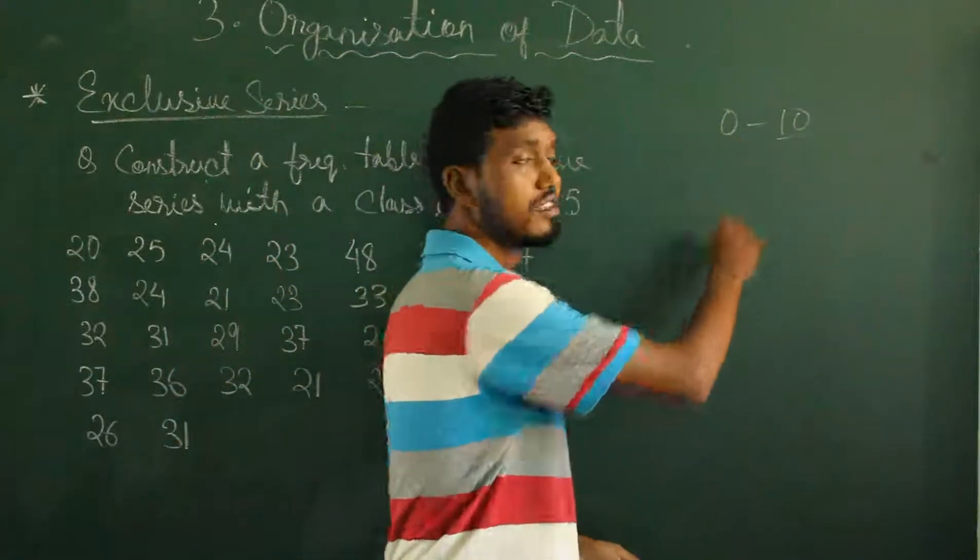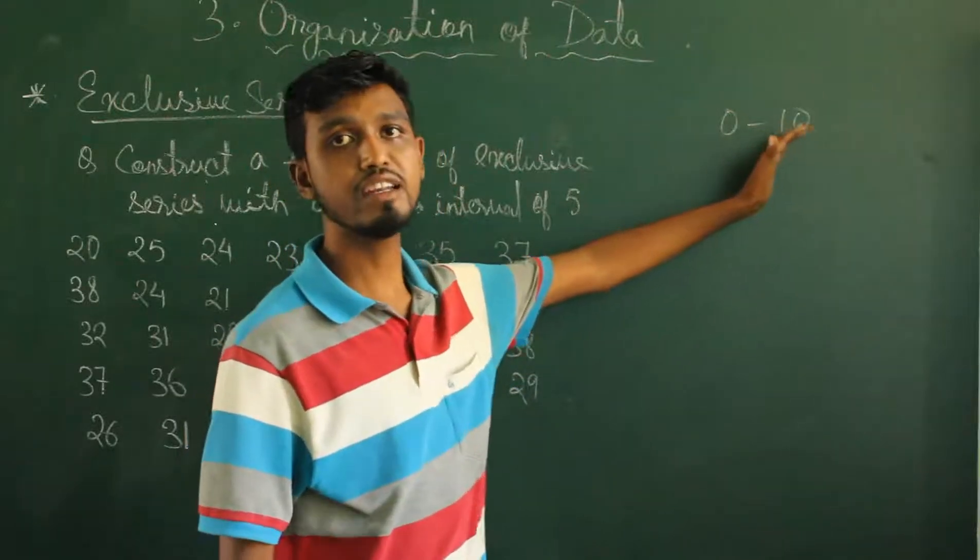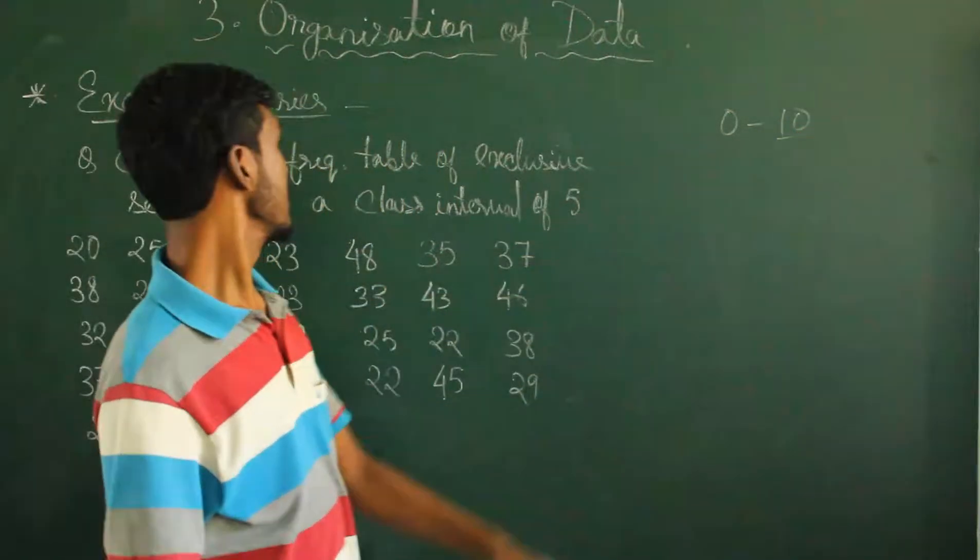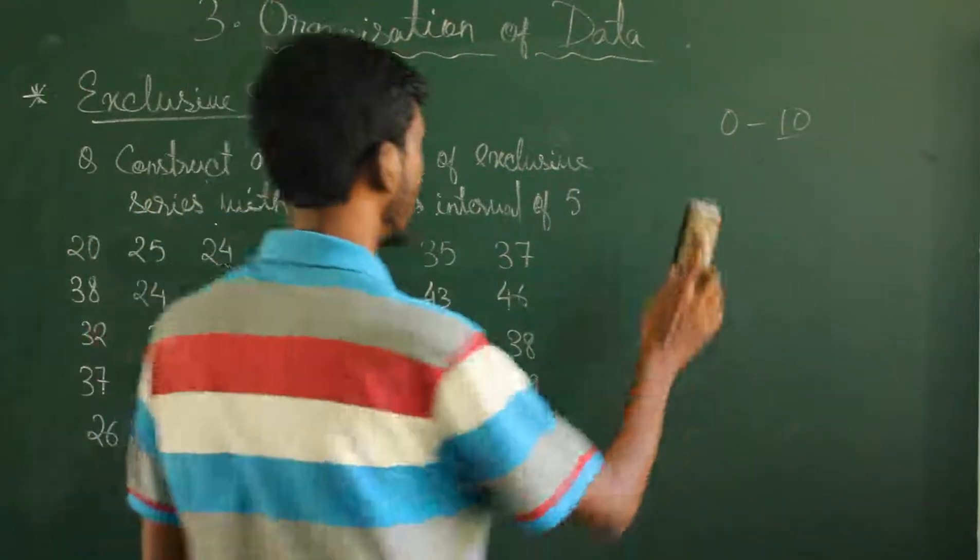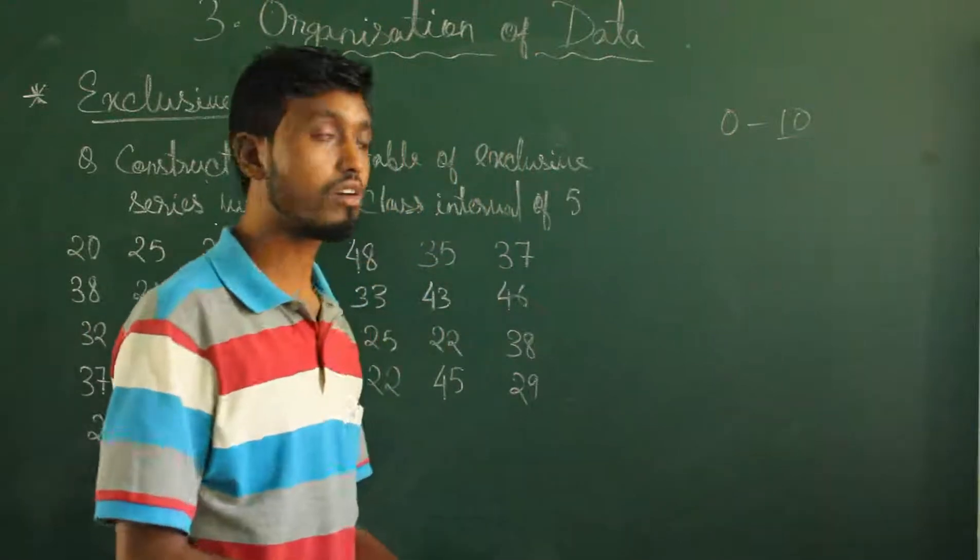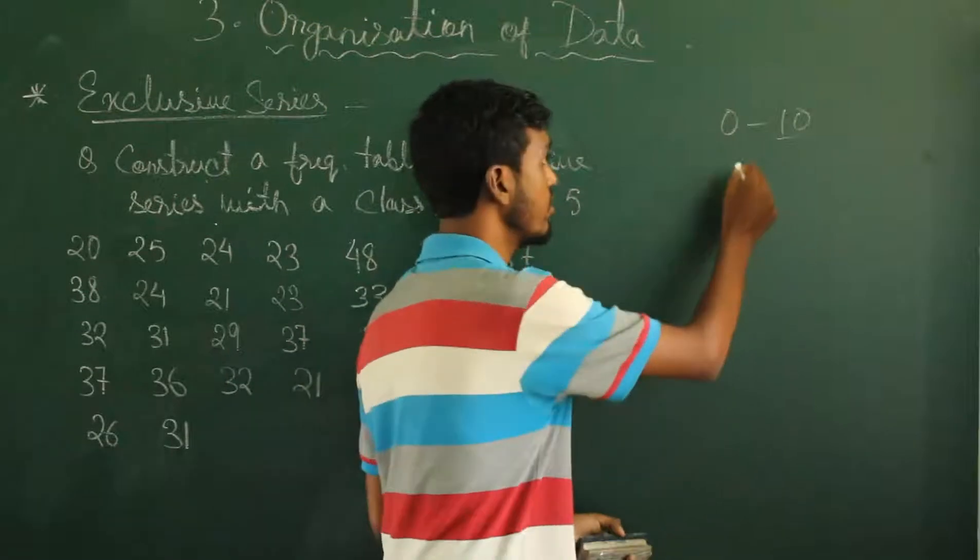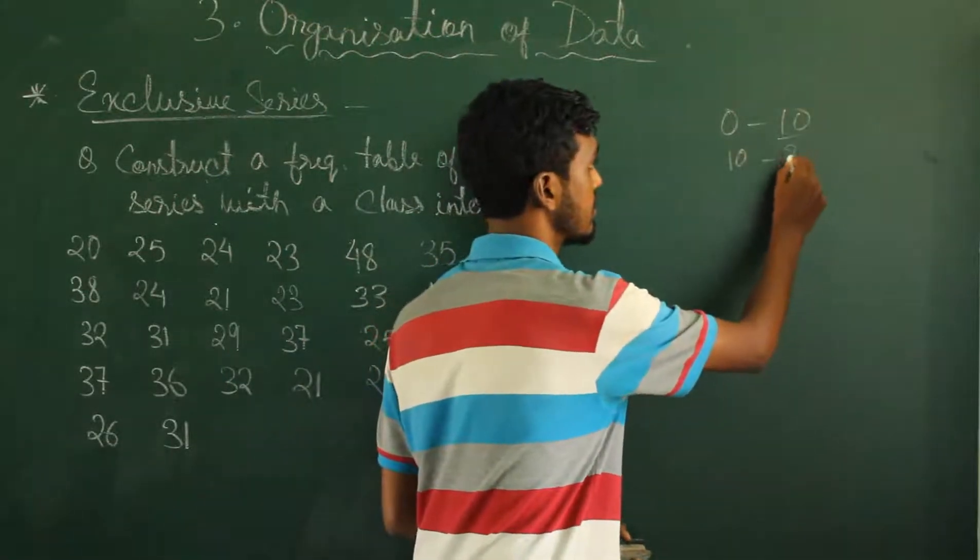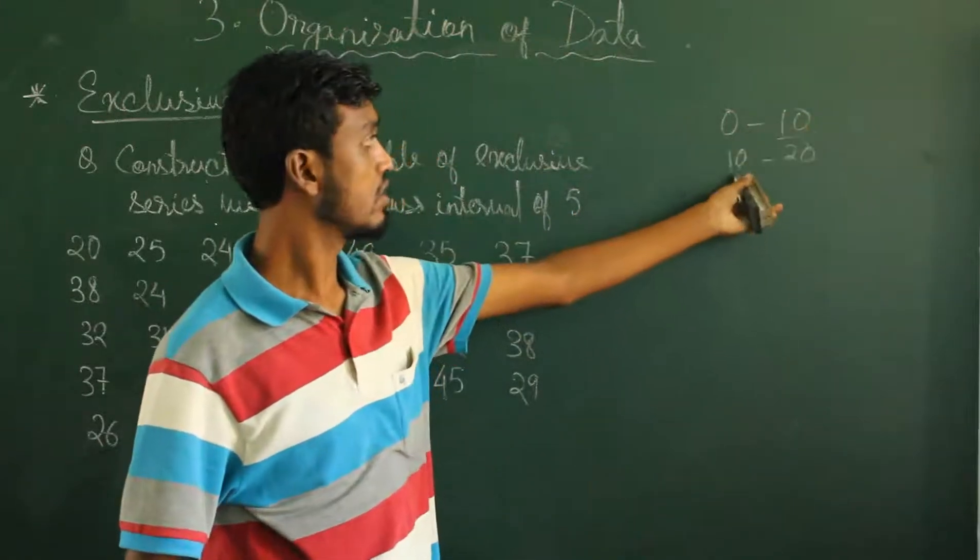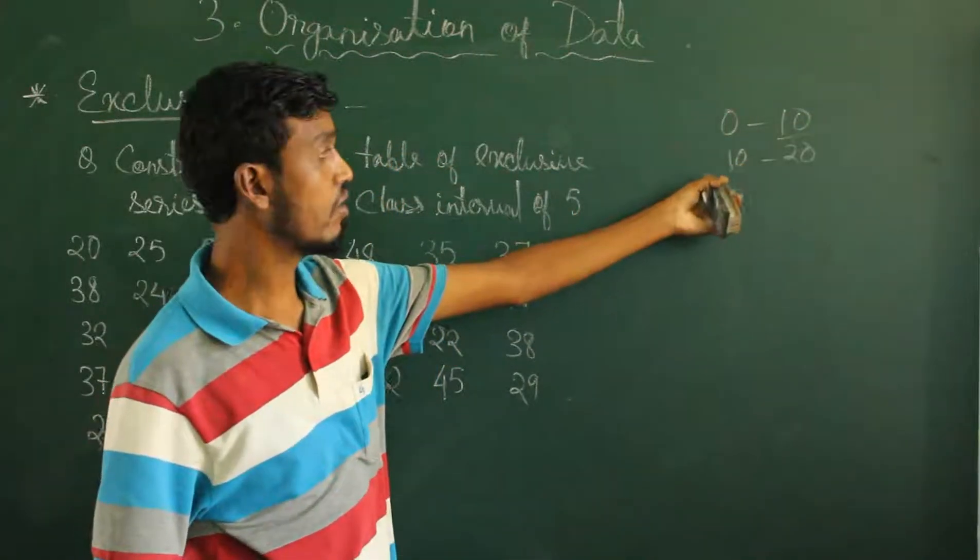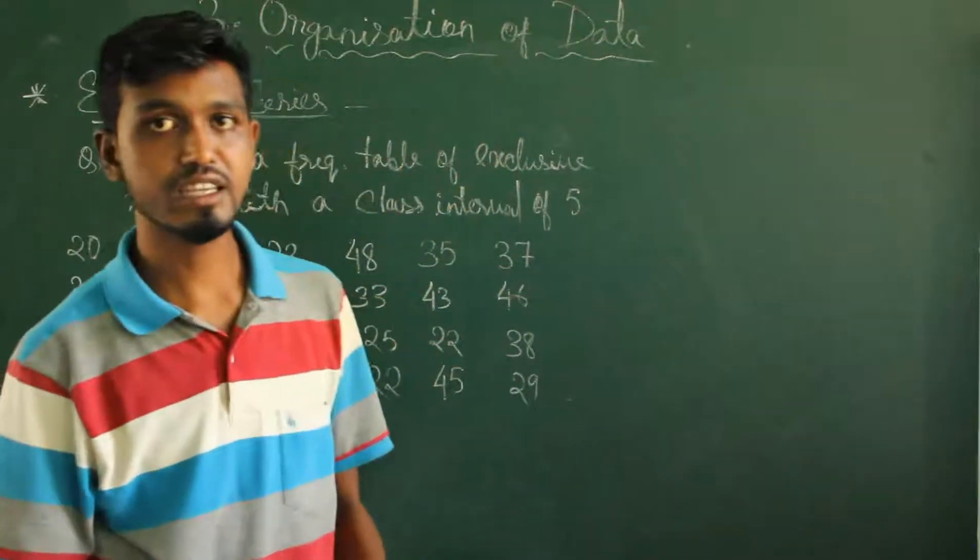Upper limit is excluded, not included, that means 0, 1, 2, 3, 4, 9 will be counted but 10 is not included. In exclusive series what happens is the upper limit of the first line becomes the lower limit of the next line. Like here 10 was the upper limit and in the next line it becomes the lower limit.